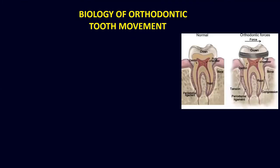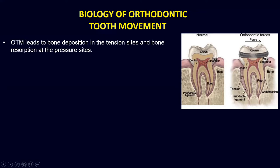When a force is applied to a tooth, the root moves within the bone. When the root moves within the bone, there is a compression site on one aspect of the periodontal ligament on the side of the tooth movement. Here, bone resorption is carried out to give passage and clearance to the root to move in that particular direction. However, on the opposite side, you would have a tension site where the periodontal ligament and fibers are stretched.